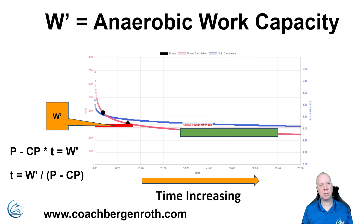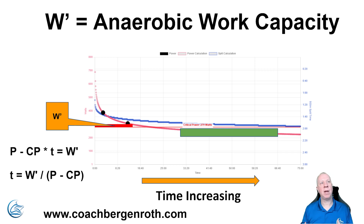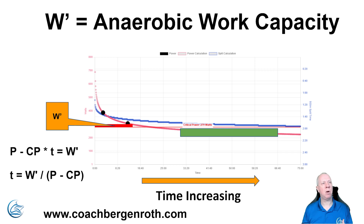One of the workouts I like to do with my athletes, and have seen some success with, is four by five minutes with nine minutes rest. I did five by five minutes in college, but you can get a good training effect with three or four repetitions — you don't have to do five as long as you do quality efforts. I typically program this to be about 105 to 115 percent of critical power, depending on the athlete.